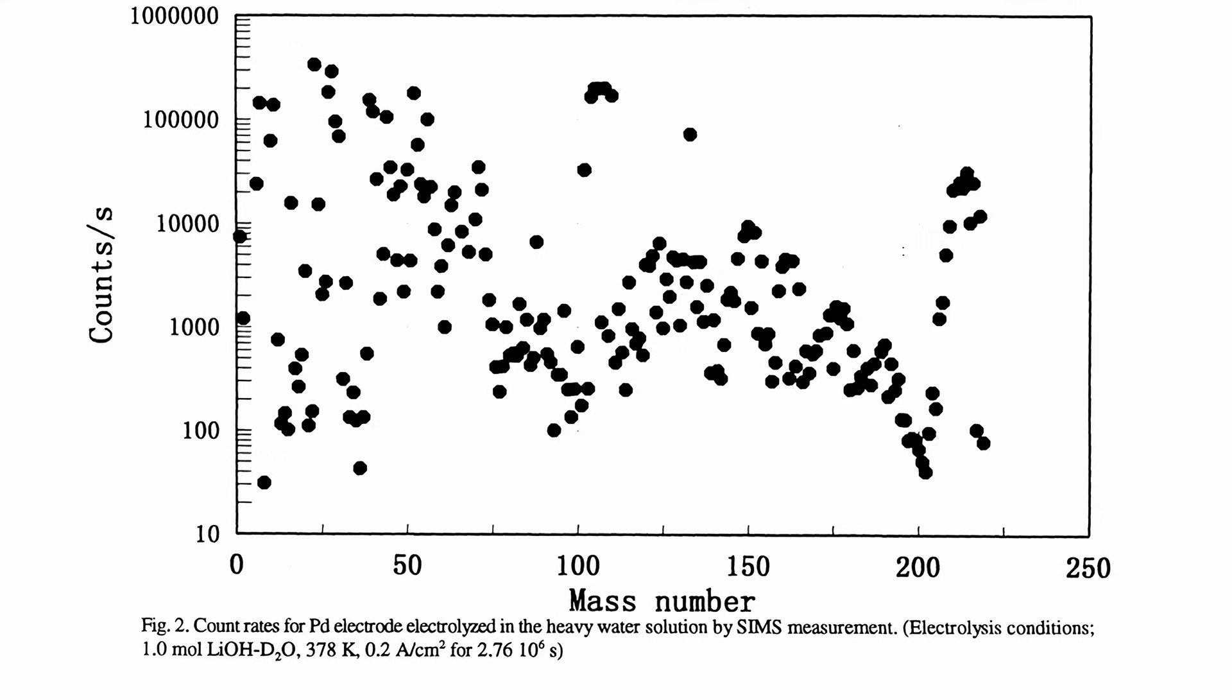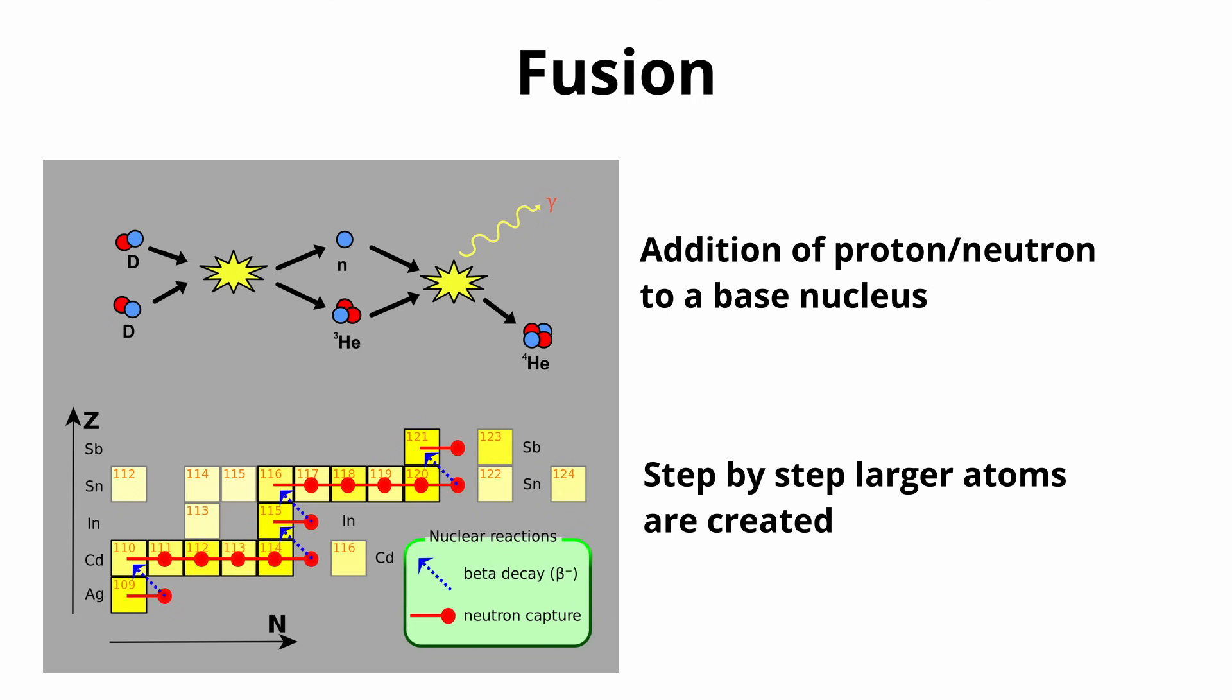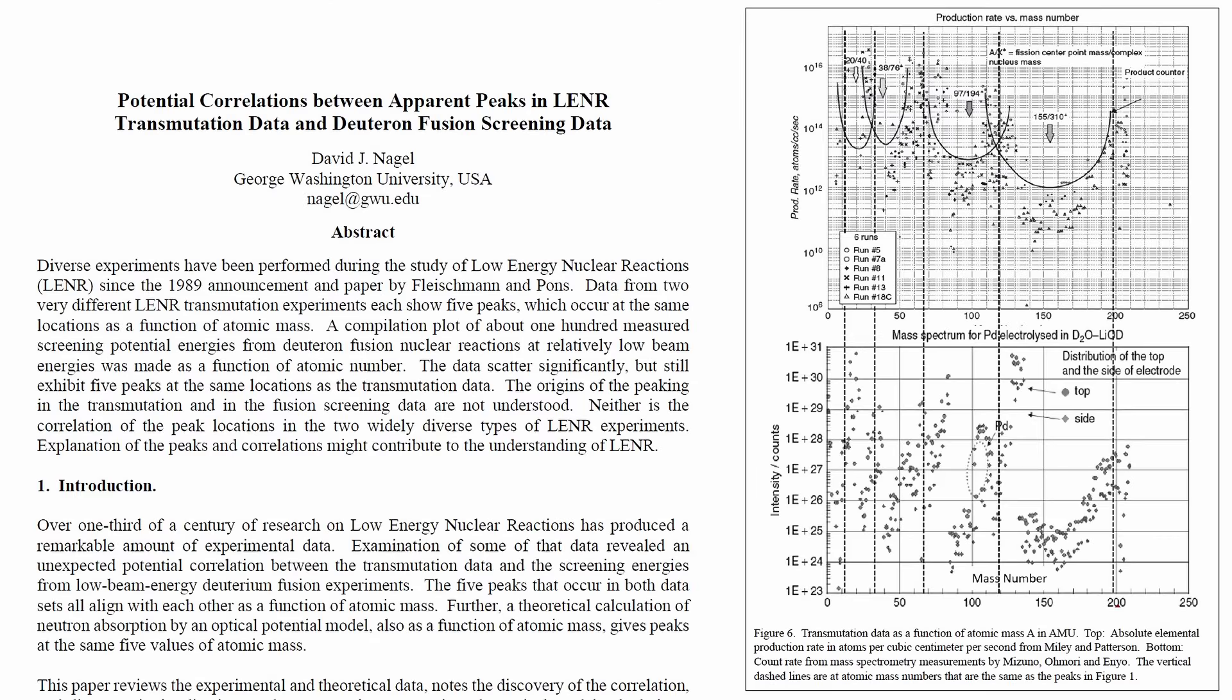Building on Nagel's findings, it becomes evident that no single mechanism can fully account for the diversity of observed phenomena in LENR. While early efforts focused primarily on fusion-like processes, Nagel's investigations into LENR transmutation reveal a striking and unexpected commonality across multiple datasets: the clustering of reaction products around five distinct atomic mass peaks.